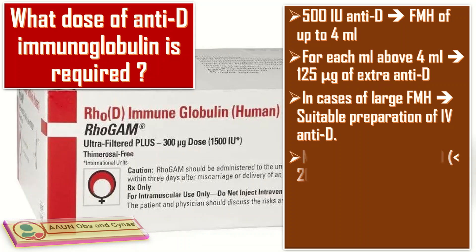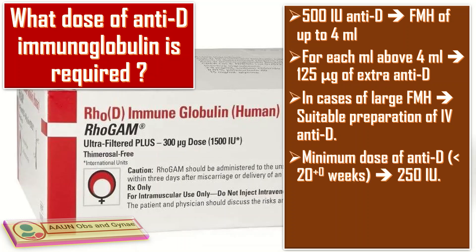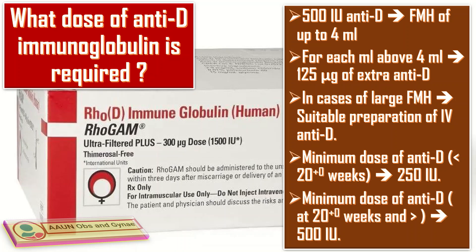The minimum recommended dose of anti-D immunoglobulin at less than 20 weeks of gestation is 250 international units. The minimum dose at 20 weeks of gestation and above is 500 international units.